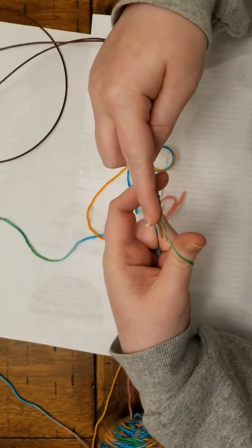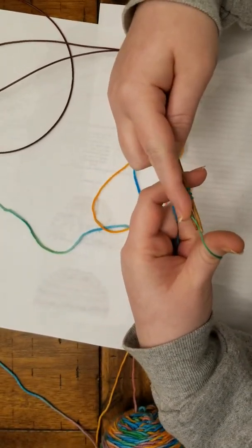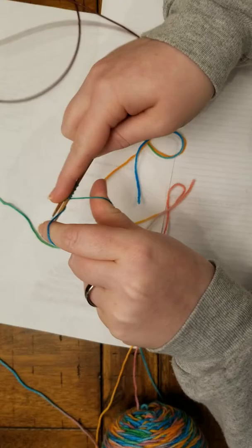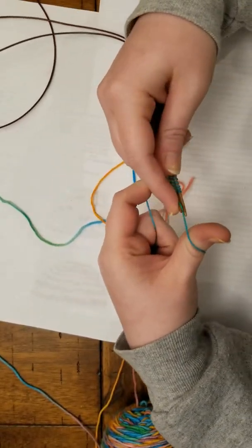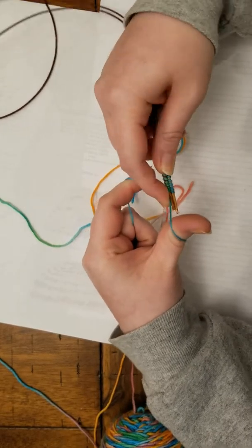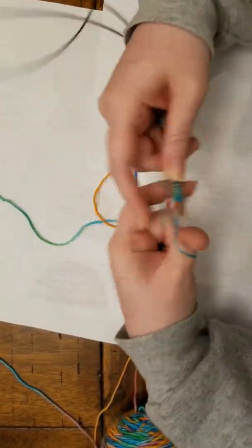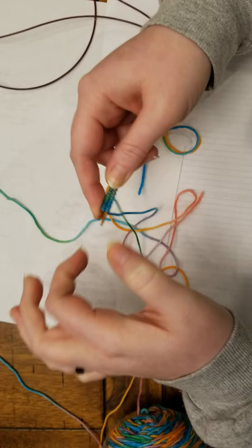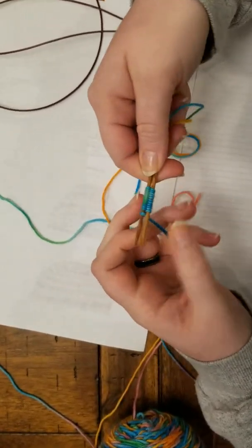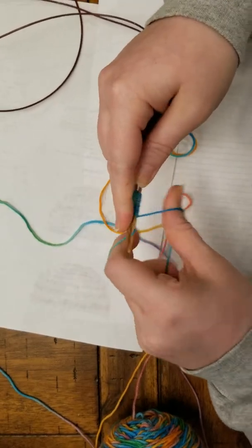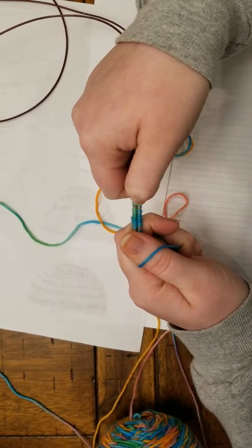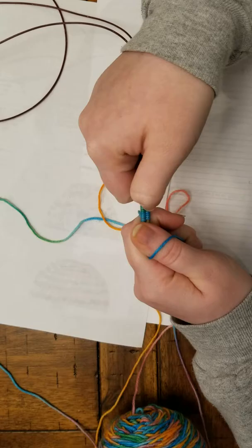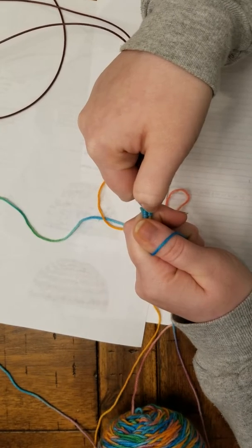Here you'll want to cast on about 12 on each needle for each sock, so 24 stitches per sock is what you would like to do. I like this yarn because you can really see where the stitches are with the different colors. One, two, three, four, five, six, seven, eight, nine, ten, eleven, twelve.